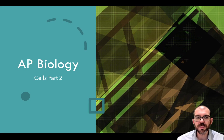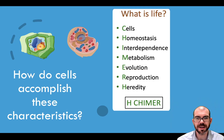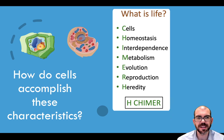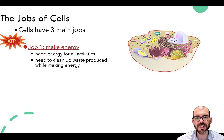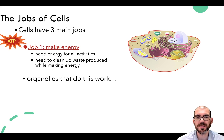This video is part two of reviewing all of the structure and function of eukaryotic cells. Our goal is still the same as the first video: we need to be able to explain how cells are able to accomplish the fundamental characteristics of living things — how they're able to maintain homeostasis, interdependence, metabolism, evolution, reproduction, and heredity. Last time we looked at the first main job of a cell: how it makes energy, and how it needs energy for all of its activities and to clean up the waste produced while making that energy.